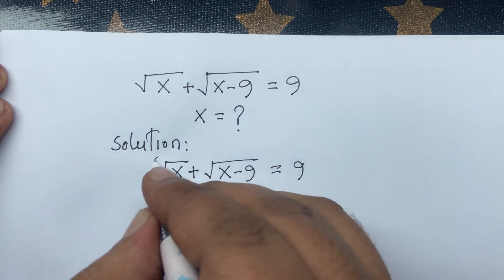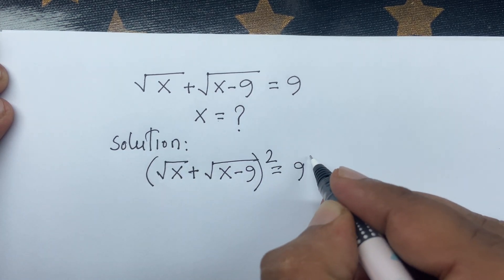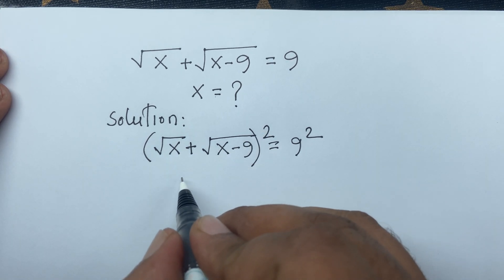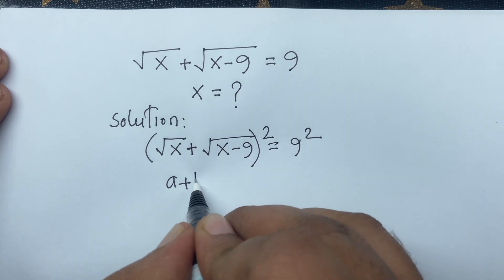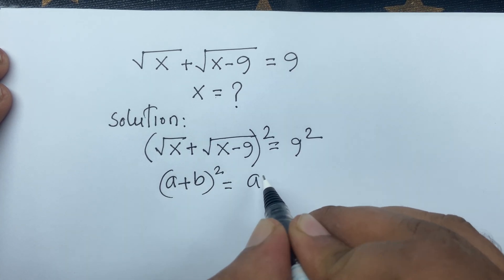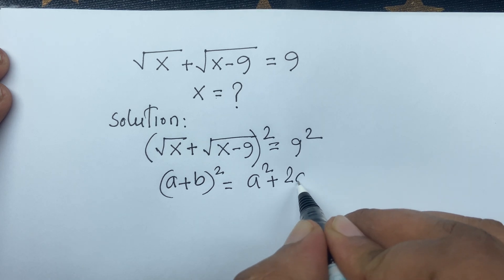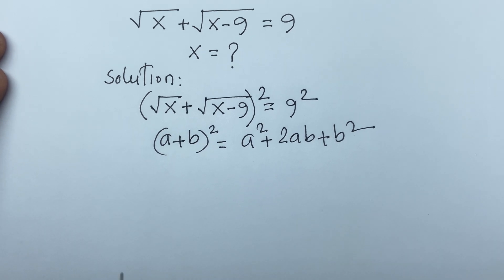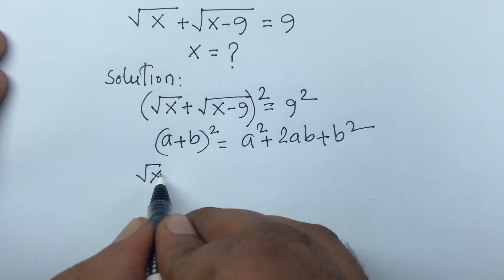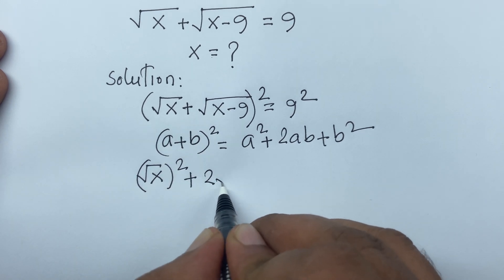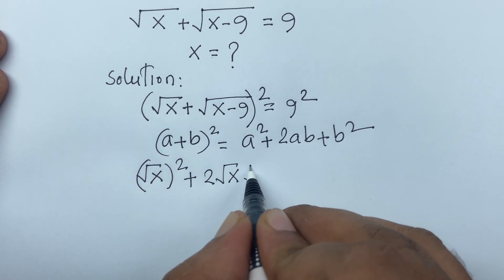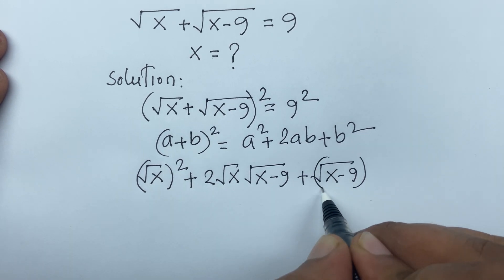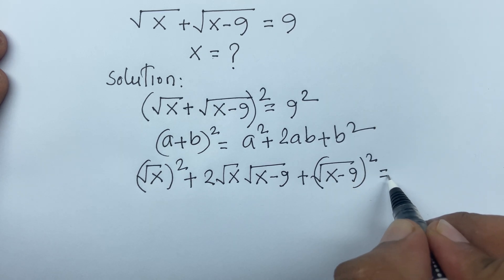I use both sides whole square. If we let a equal square root x and b equal square root of x minus 9, then a plus b whole square equals a squared plus 2ab plus b squared. According to these rules, it will be square root x whole squared plus 2 times square root x times square root of x minus 9 plus square root of x minus 9 whole squared, equal to 81.